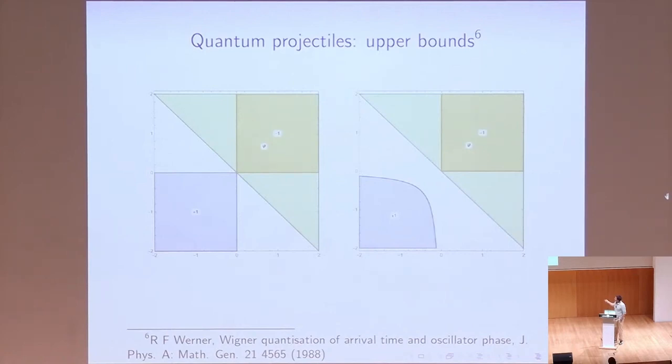And by taking some, studying lots of different regions, we can get better and better upper bounds. So what we get is that the Bracken-Mellory constant has to be smaller than 0.08, while Werner's result was only 0.15.